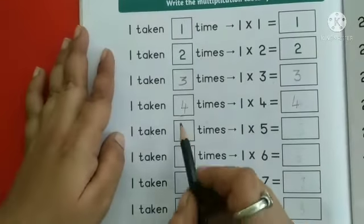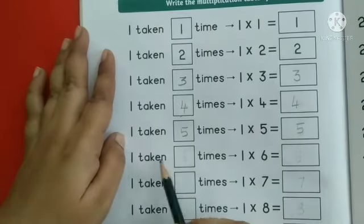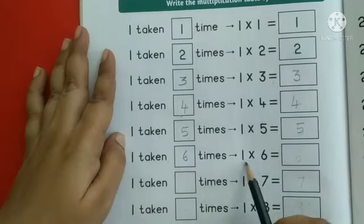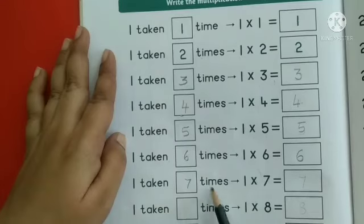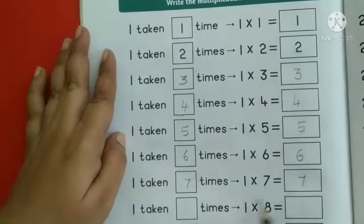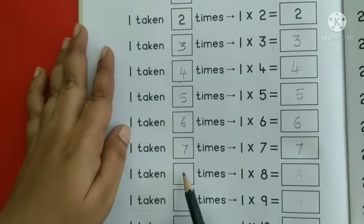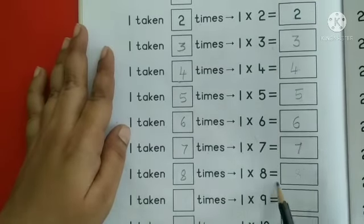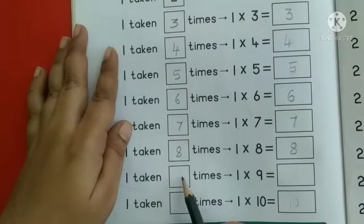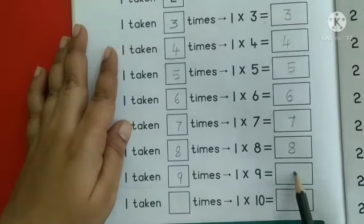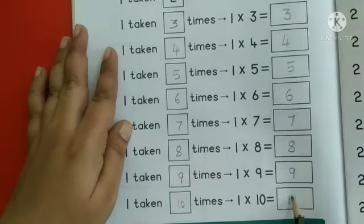Next 1 taken 5 times. 1 into 5 is equal to 5. 1 taken 6 times. 1 into 6 is equal to 6. 1 taken 7 times. 1 into 7 is equal to 7. Next 1 taken 8 times. Write number 8. 1 into 8 is equal 8. Next 1 taken 9 times. 1 into 9 is equal to 9. 1 taken 10 times. 1 into 10 is equal 10.